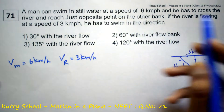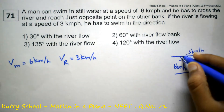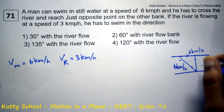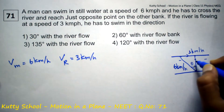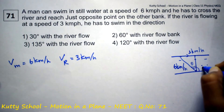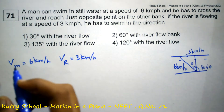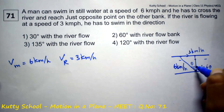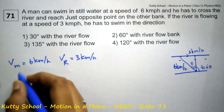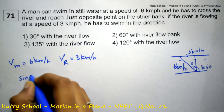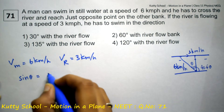He has to swim in a certain direction — he wants to swim in that direction to reach just opposite the river. So this angle is theta and this one is 90 degrees plus theta. Sine theta is opposite by hypotenuse, so sine theta is equal to 3 by 6.